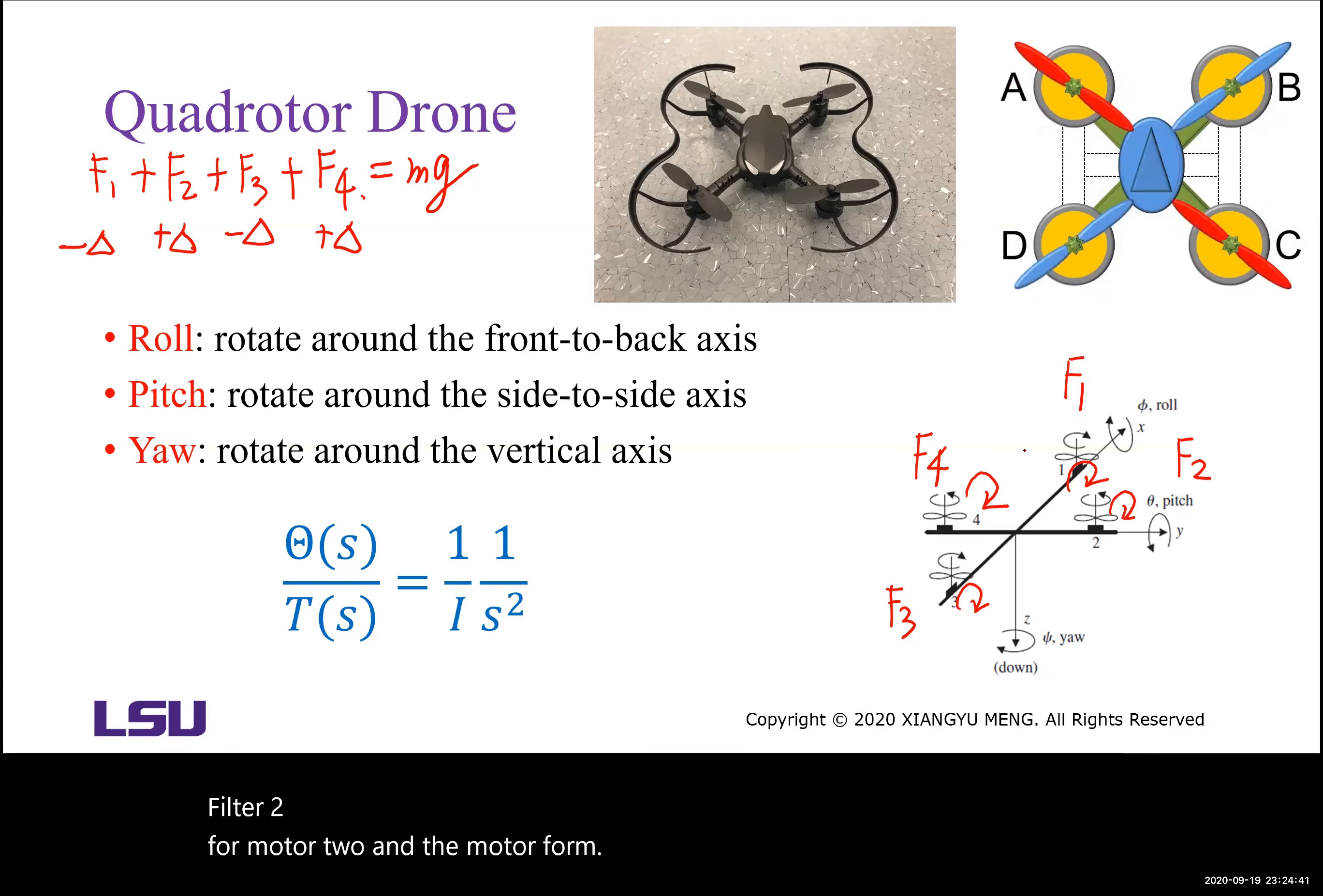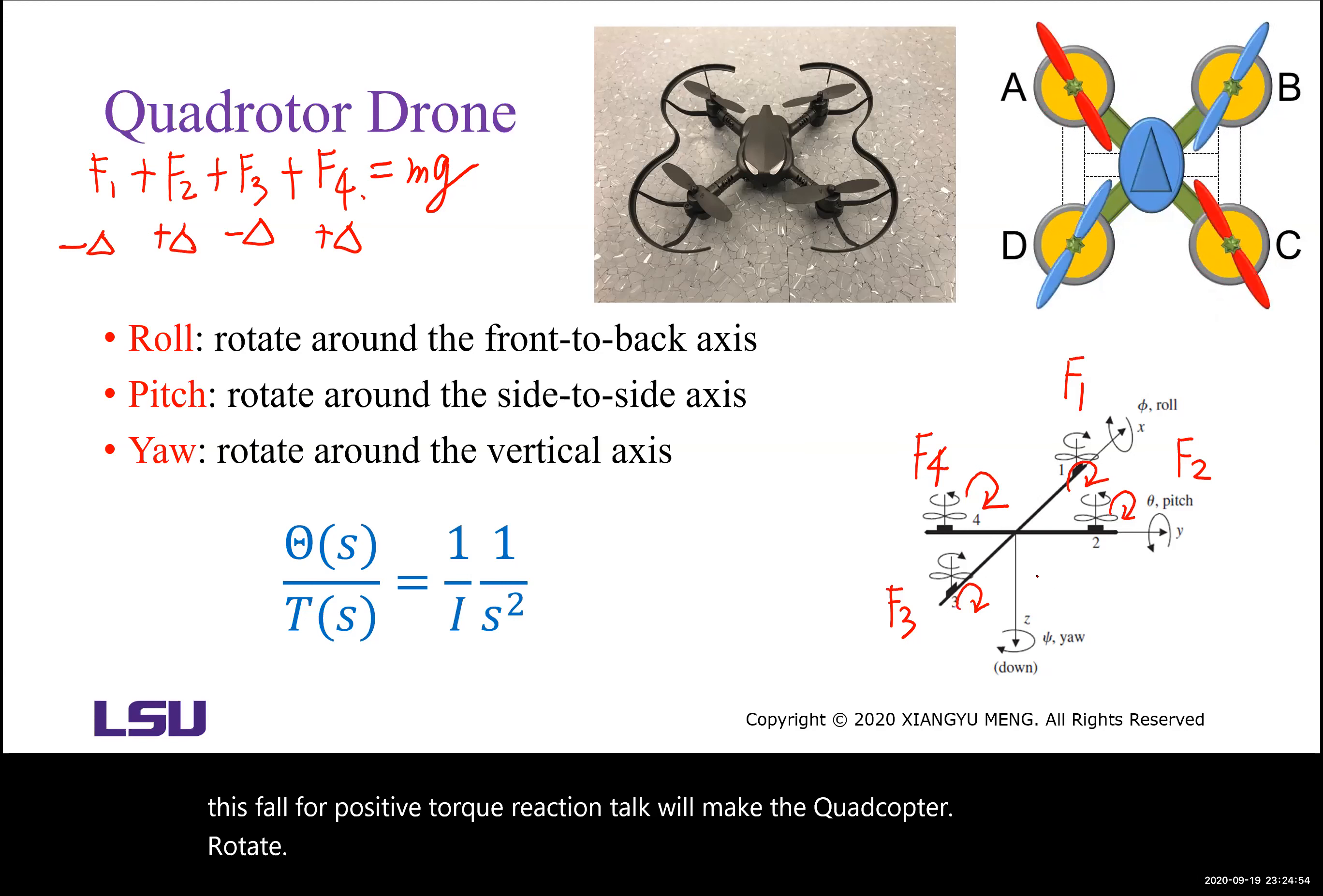Then these four positive reactions will make the quadcopter rotate in the clockwise direction along the vertical axis z.